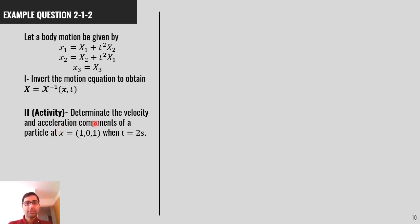Just pay attention. Here, the current position of the particle is given. In the previous example, we had capital X, the initial position of the particle given. So, here, you need to use the inverse map to calculate the velocity and acceleration.